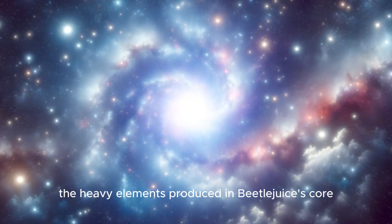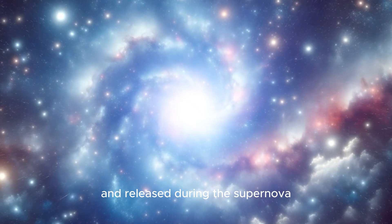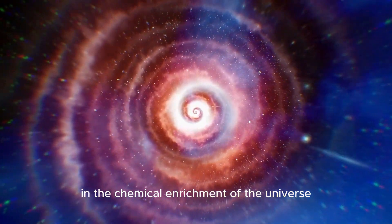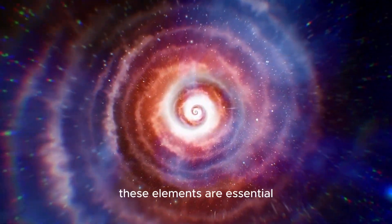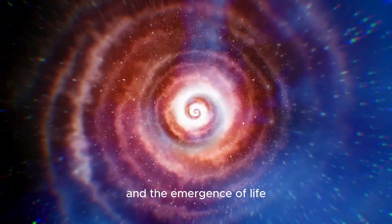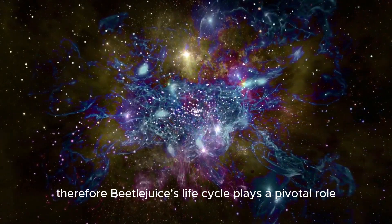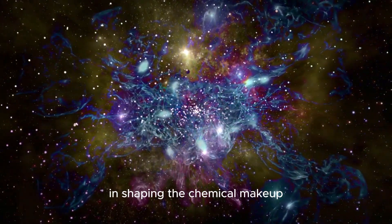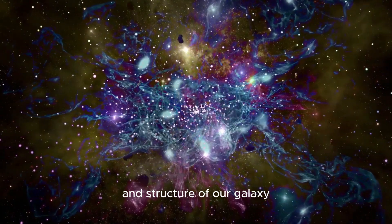Furthermore, the heavy elements produced in Betelgeuse's core and released during the supernova play a crucial role in the chemical enrichment of the universe. These elements are essential for the formation of planets and the emergence of life. Therefore, Betelgeuse's life cycle plays a pivotal role in shaping the chemical makeup and structure of our galaxy.